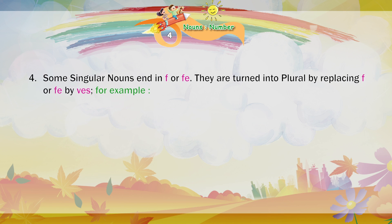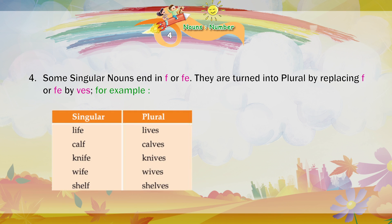Some singular nouns end in F or FE. They are turned into plural by replacing F or FE by VES. For example: